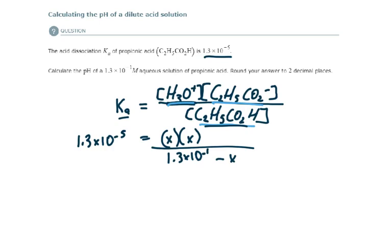Now before we move forward and risk having to go through all of the math of the quadratic formula, let's make sure that the approximation method, the assumption, is not valid. So we are going to assume that X here is so small that subtracting it from 1.3 times 10 to the minus 1 will not really change that value very much at all. So we can continue on to solve for X by just getting rid of that.